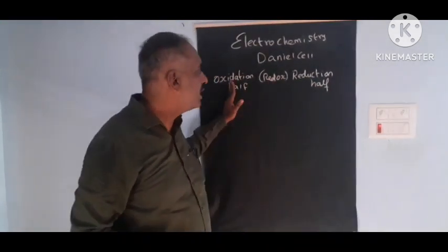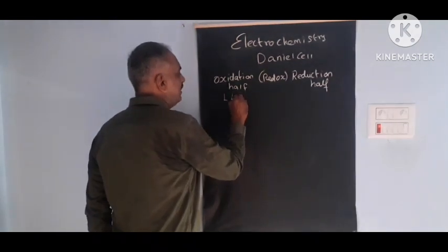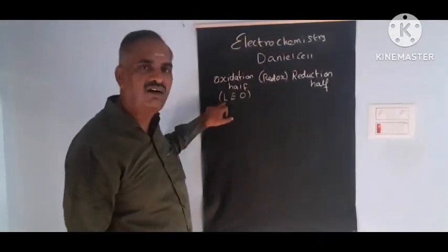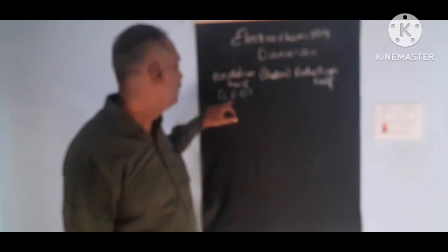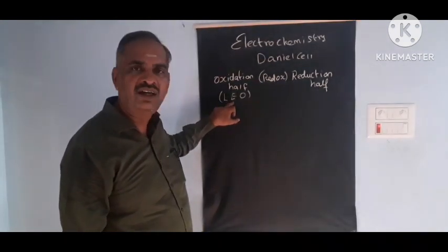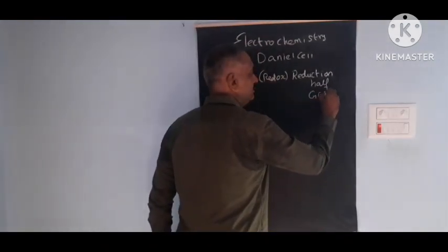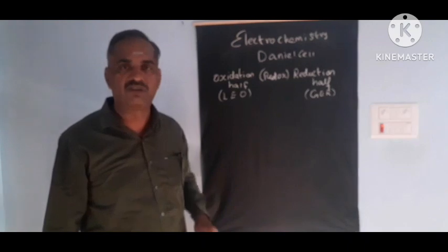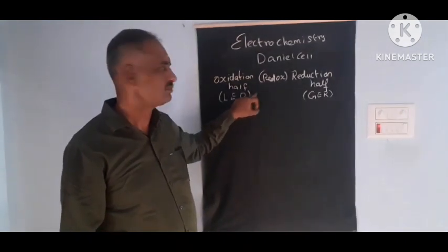Loss of electron is called oxidation — that is the oxidation half. Remember: LEO — Loss of Electron is Oxidation.